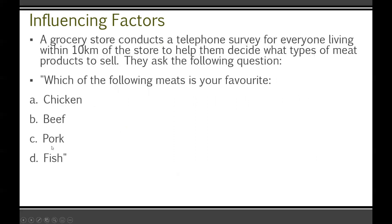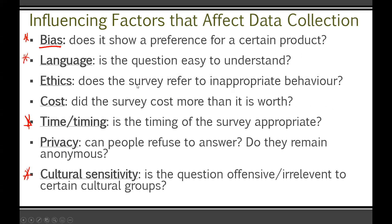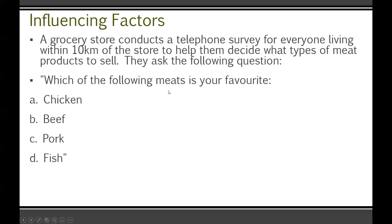A grocery store conducts a telephone survey for everyone living within 10 kilometers of the store to help decide what types of meat products to sell. They ask: which of the following meats is your favorite — chicken, beef, pork, or fish? Pause the video and see if you can identify any factors. Bias — maybe, because you could argue the bias is just towards meat in general. The biggest issue is there isn't an option E for 'none' or 'other,' which might be a stretch for bias but is worth considering.